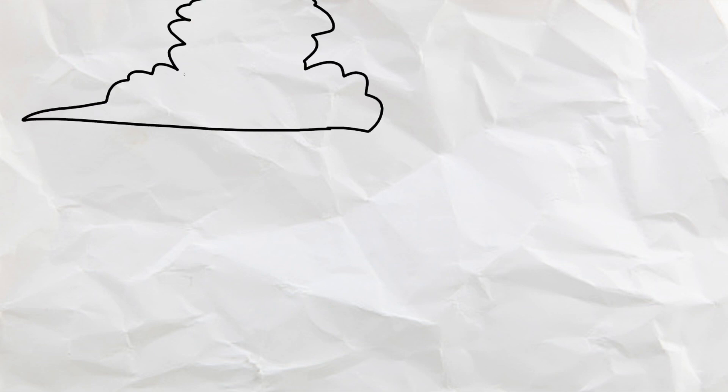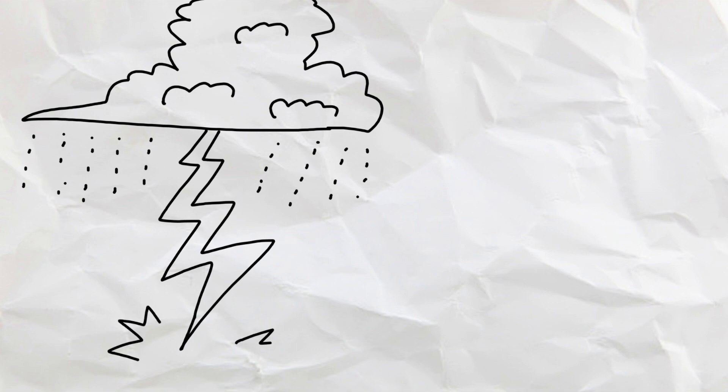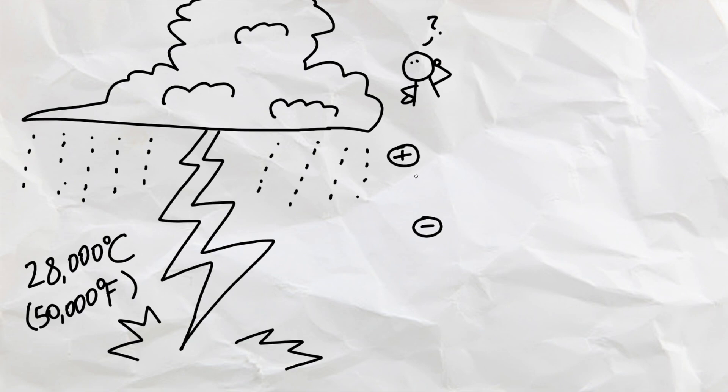Thunderstorms are pretty scary stuff, smiting down lightning of up to 28,000 degrees from clouds onto the ground seemingly out of nowhere, so unsurprisingly, there is a lot of science between the buildup of those clouds to the sound of thunder we hear.